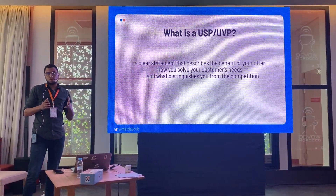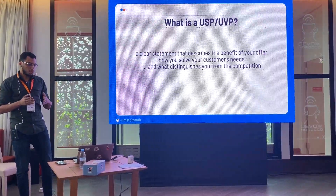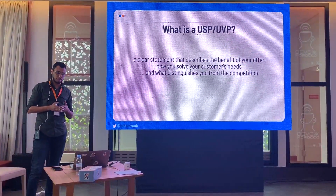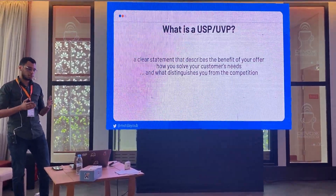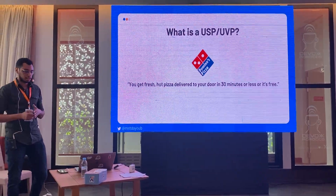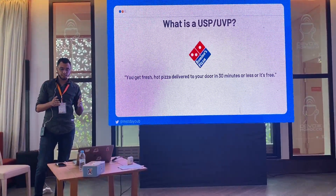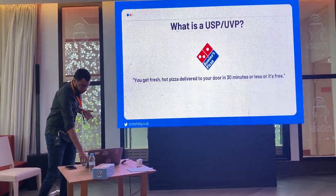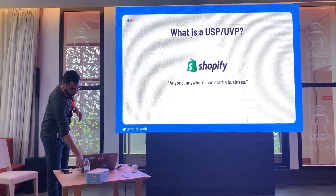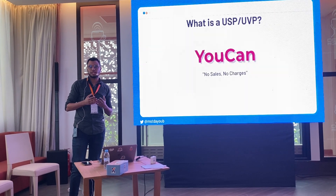An important thing in the SaaS field is your unique selling proposition or unique value proposition — a clear statement that describes the benefits of your offer, how you solve your customer needs, and what distinguishes you from the competition. For example, Domino's Pizza USP is 'fresh hot pizza delivered to your door in 30 minutes or less.' For Shopify, it's 'anyone, anywhere can start a business.' Those are USPs that attract customers.